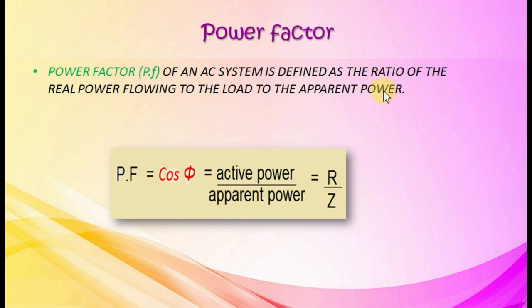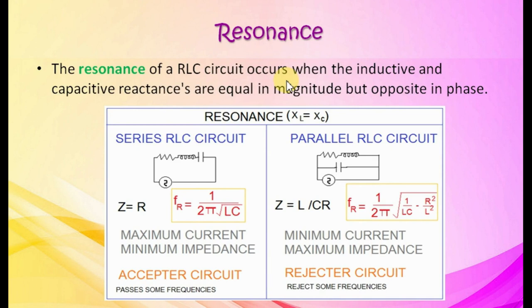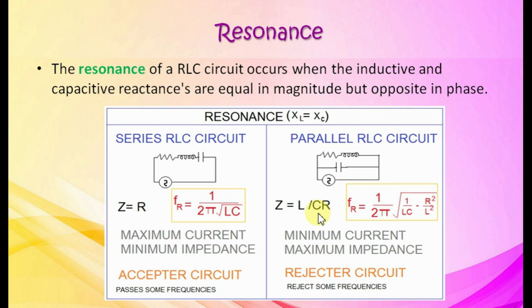Resonance of a RLC circuit occurs when inductive and capacitive reactances are equal in magnitude but opposite in phase. For a series RLC circuit, impedance at resonance is resistance. It becomes an acceptor circuit, passing certain frequency bands. For a parallel RLC circuit, impedance at resonance is L by CR. It becomes a rejector circuit, rejecting certain frequency bands. Resonant frequency equations are given for both cases.